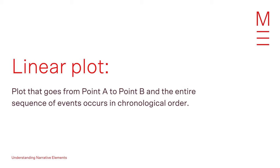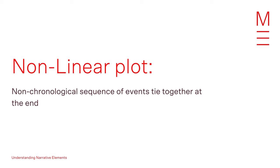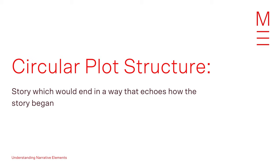Our plot needs to say a lot with not very many words at all. The first question to ask yourself is: are you going to use a linear or a non-linear plot line? A linear plot line goes from point A to point B in chronological order. Non-linear plot lines can be more complicated but also very satisfying when non-chronological events tie together at the end. A plot structure that would add interest to a flash fiction piece would be a circular plot structure — where your story ends in a way that echoes how you began. A great example of a circular plot structure is James Thurber's short story 'The Secret Life of Walter Mitty.'